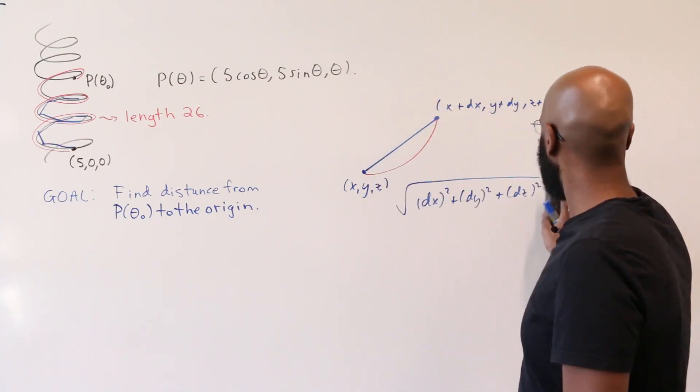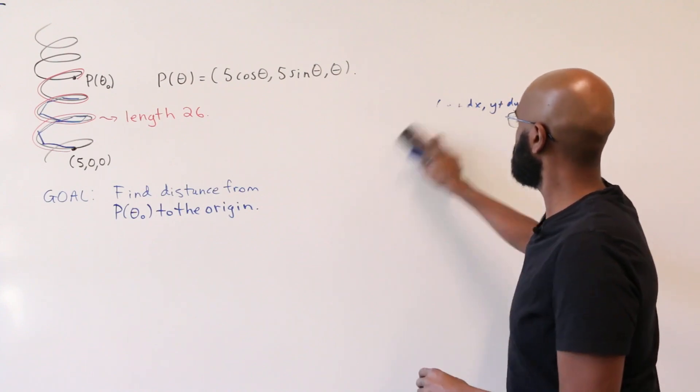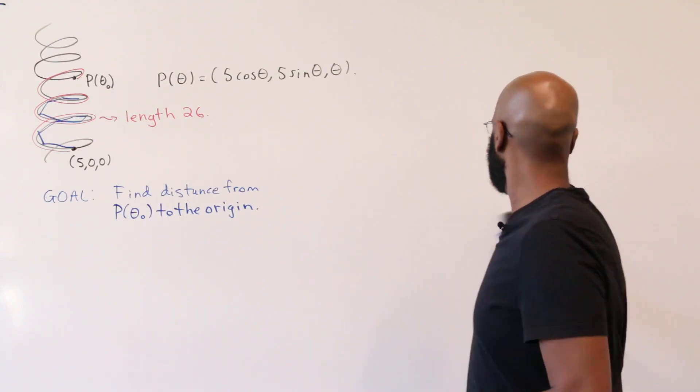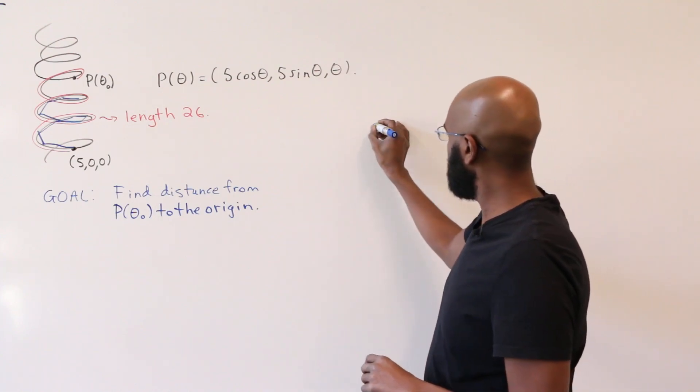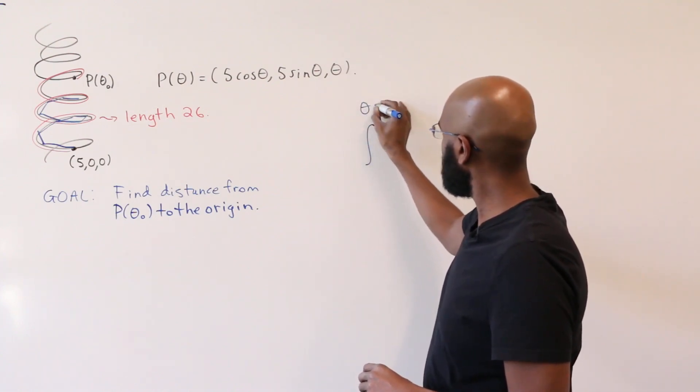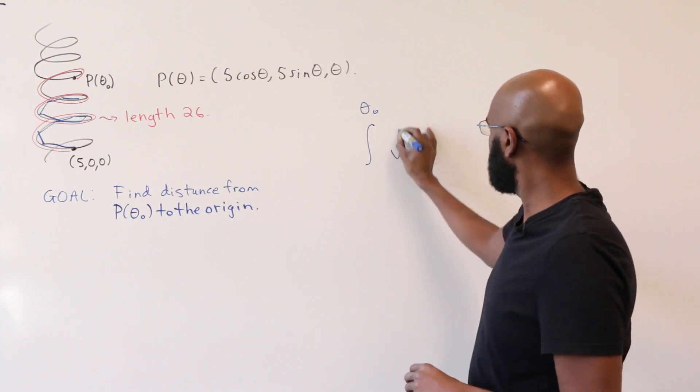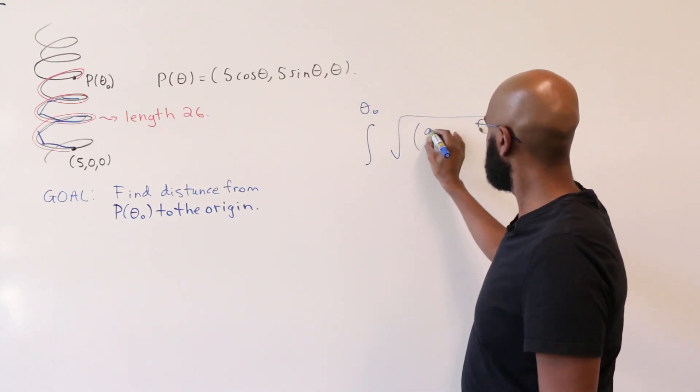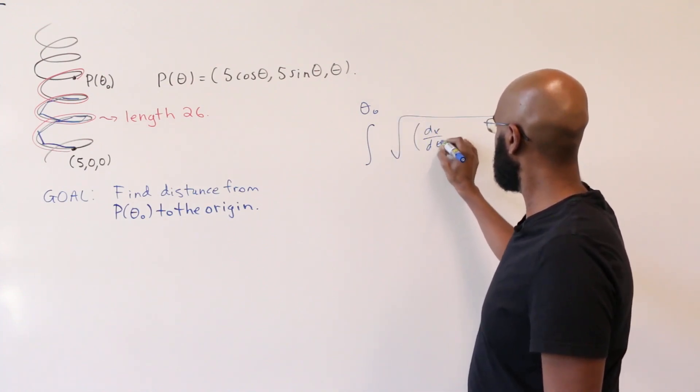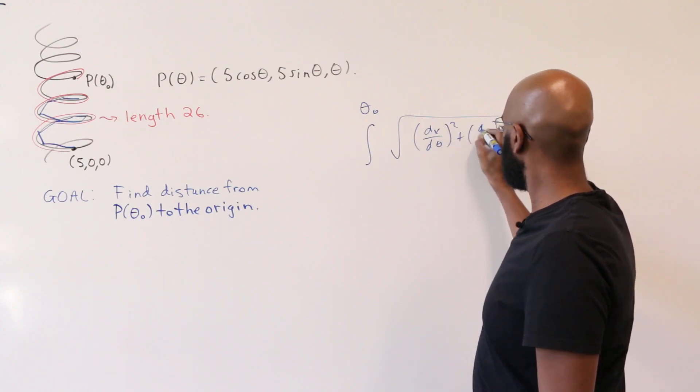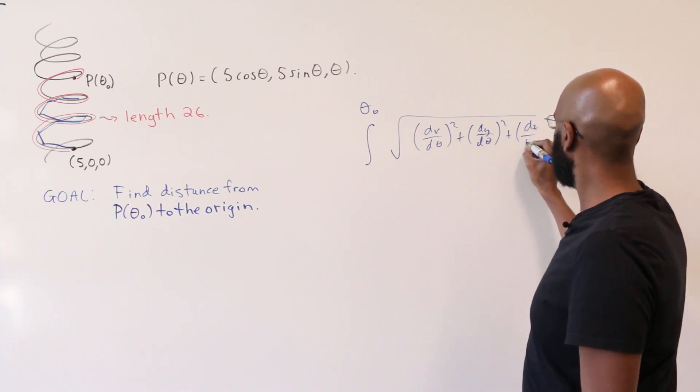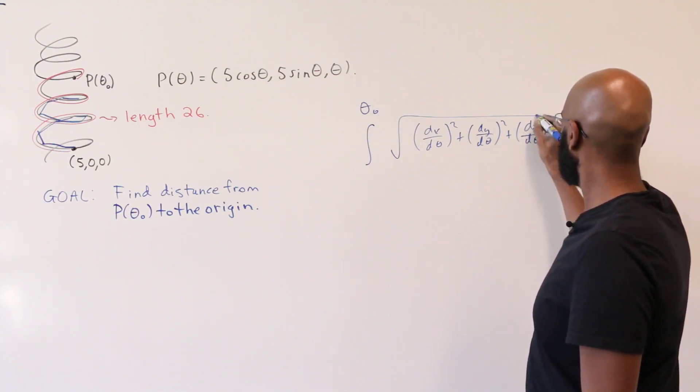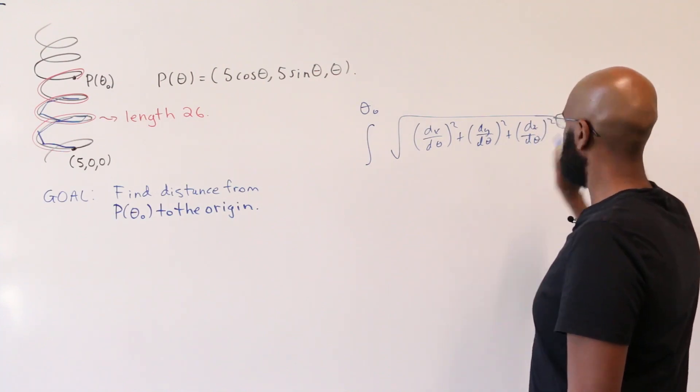So in fact, from this intuition we do get the formula for the length of this thing, which is the integral from something to theta naught of the square root of (dx/dθ)² plus (dy/dθ)² plus (dz/dθ)², dθ.